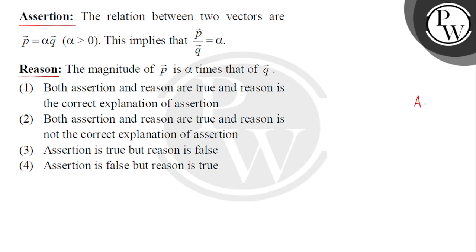First, we have to check if the assertion is true, then if the reason is true. In the third step, we check whether the reason correctly explains the assertion. This way, we check three things in this type of question.